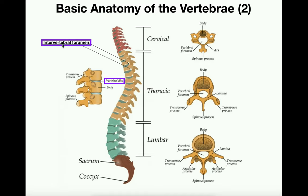Something you can only see when vertebrae are stacked — not in isolation — is the intervertebral foramen. These small holes appear between stacked vertebrae, and their purpose is to allow spinal nerves to exit. Spinal nerves that leave the spinal cord to serve the various limbs and body parts exit through these intervertebral foramen. Every vertebra pair has them.